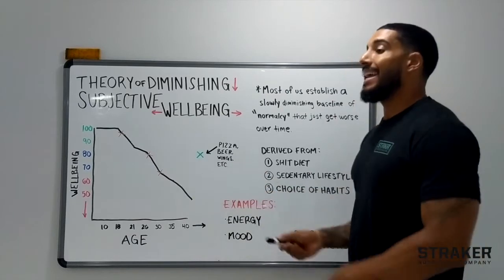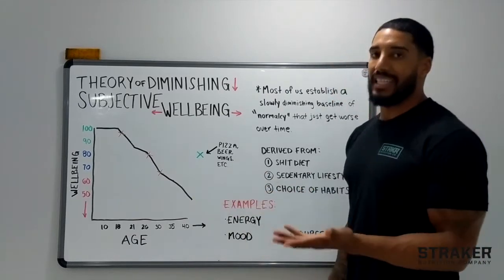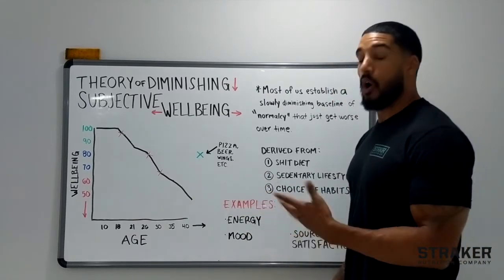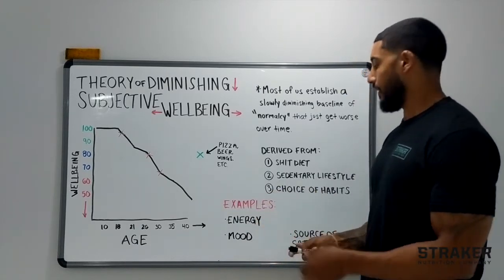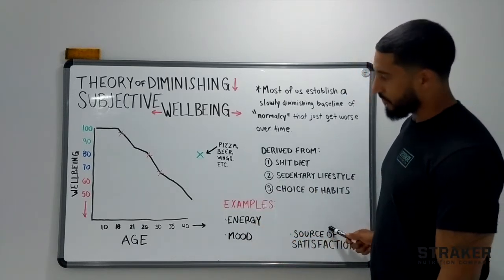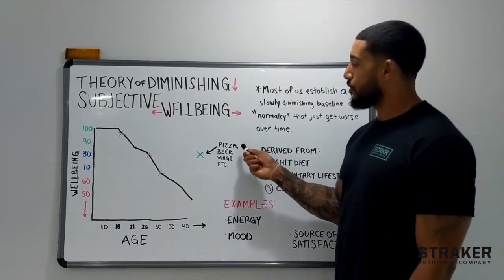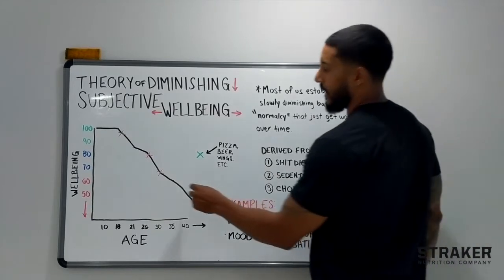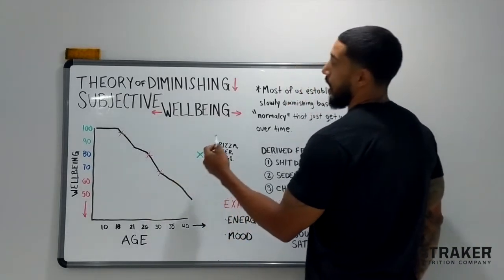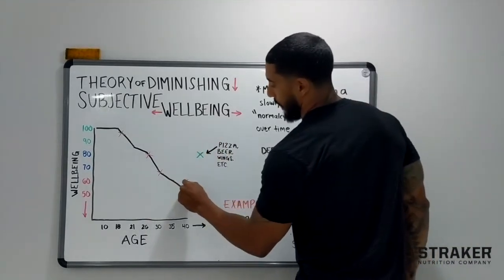And the reason why, not that you really need to give up those things forever or all the time, but you're not going to be doing them weekly or daily, is the source of satisfaction. People derive so much source of satisfaction from things like pizza, beer, and wings. And this is why their subjective level of wellbeing is down here.